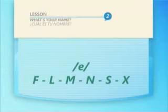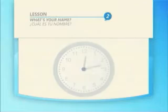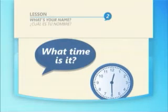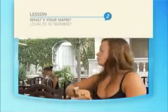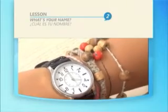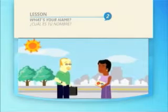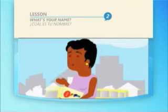Revisaremos el abecedario ordenado por sonidos para recordar la pronunciación de cada letra: F, L, M, N, S, X. Y recordaremos cómo se pronuncian los números, algo que podremos utilizar para poder decir qué hora es. Una historieta nos recordará los días y horarios en que se emiten las clases televisivas.